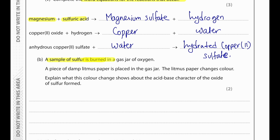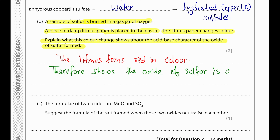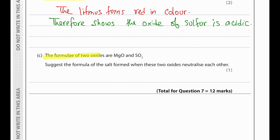A sample of sulfur is burned in a gas jar of oxygen. A piece of damp litmus paper placed in the jar turns red, showing that the oxide of sulfur formed is acidic. The formula of two oxides are MgO and SO2. When these two oxides neutralise each other, the salt formed is MgSO3.